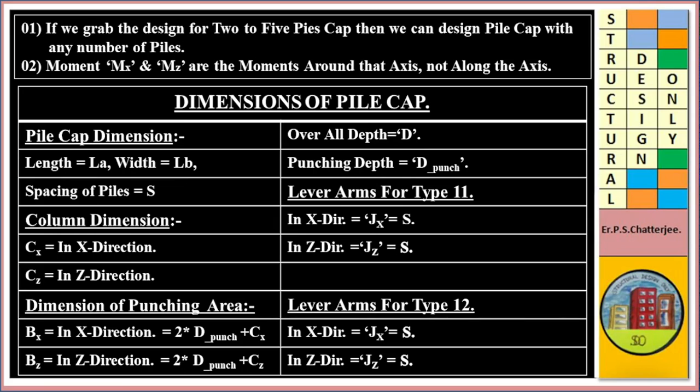Lever arm for type 11: in X direction JX equals S, JZ equals S. Lever arm for type 12: in X direction JX equals S, and in Z direction ZZ equals S.